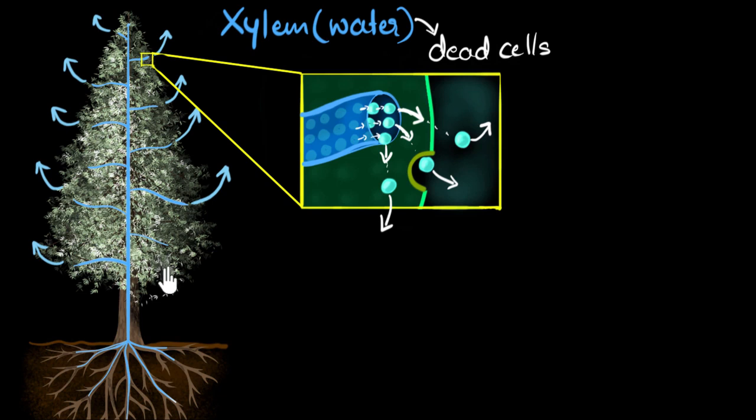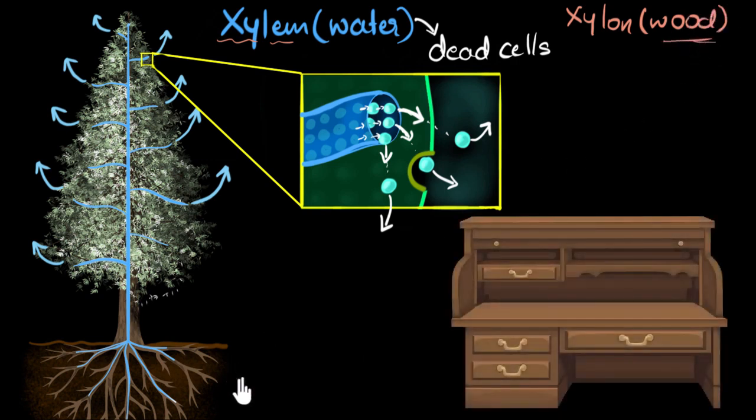And so, xylem has pretty strong walls because of which it also acts like a backbone to the plants and the trees. And if you're wondering, wood is made of xylem. In fact, the word xylem comes from the Greek xylon, which means wood. So, the wood that is used in the furnitures and tables and everything were once a part of this amazing water conducting system. Pretty awesome, right?